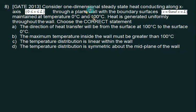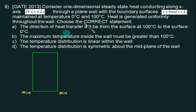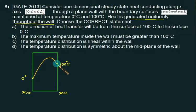This is a theoretical question on heat generation. We have steady-state heat conduction along the x-axis from 0 to L in a slab of thickness L. Boundary conditions: x=0 is maintained at 0°C and x=L is maintained at 100°C. Heat is generated uniformly throughout the wall, so we have a downward parabola passing through 0 and 100. Statement A says heat transfer will be from the surface at 100°C to the surface at 0°C.